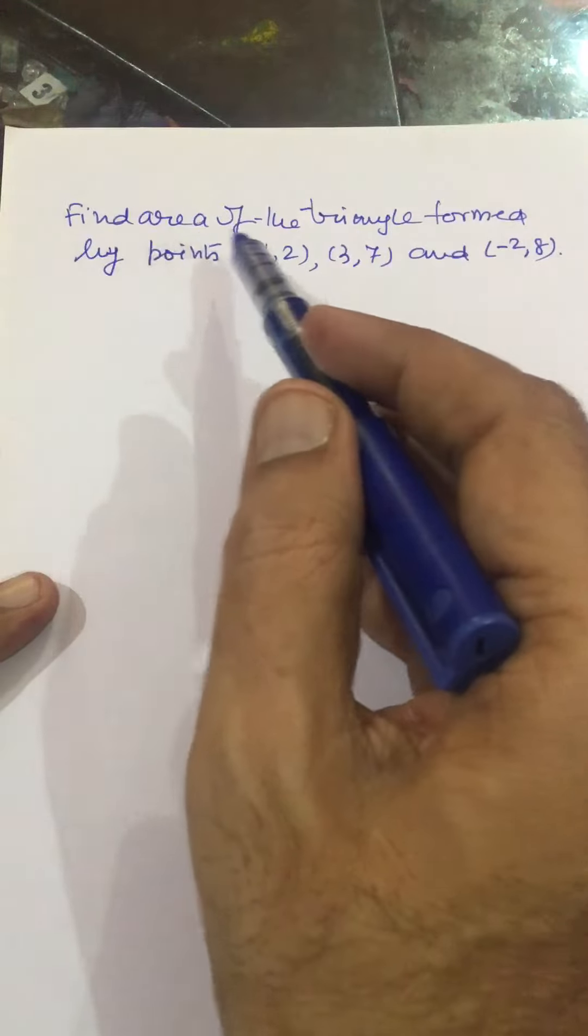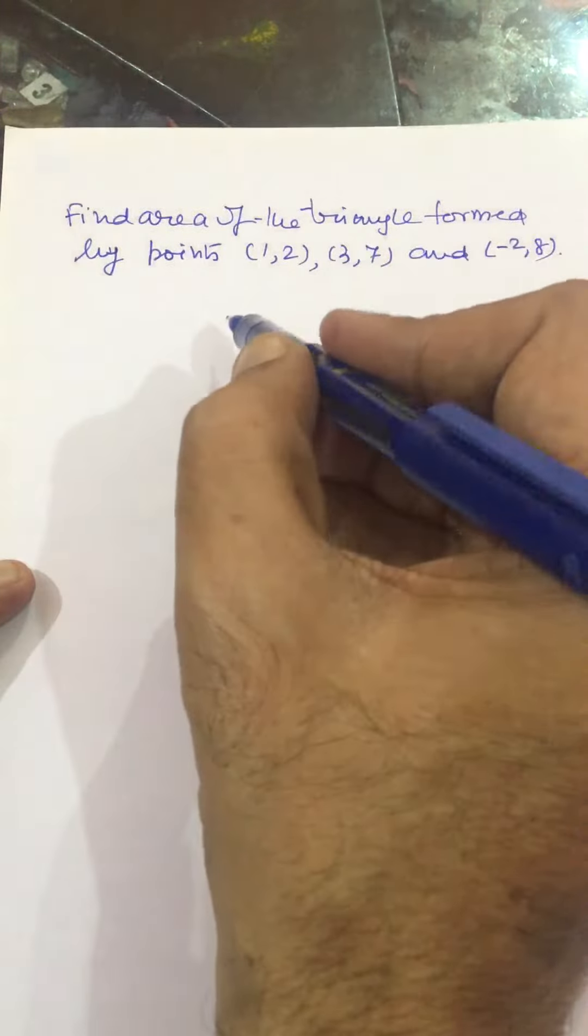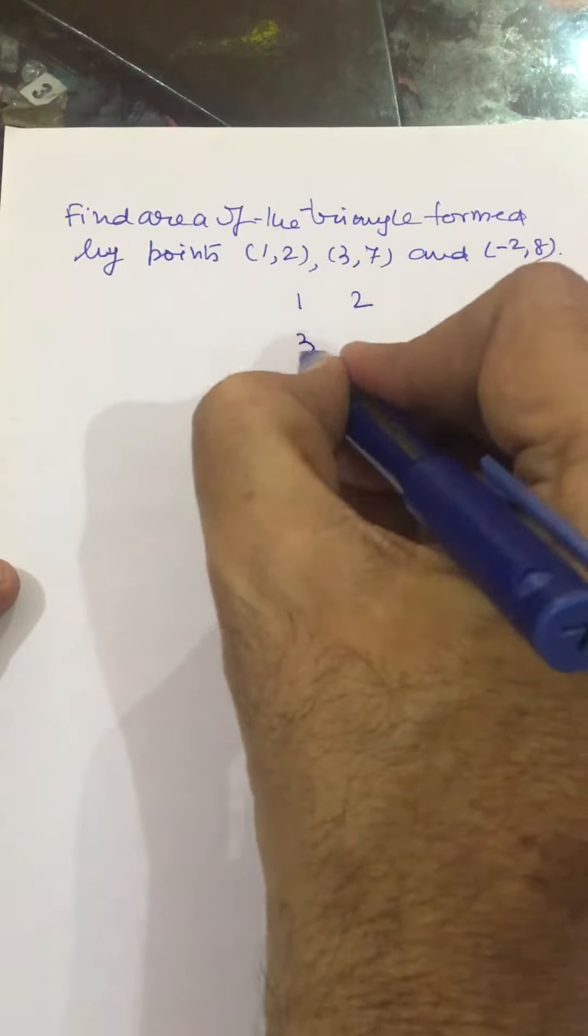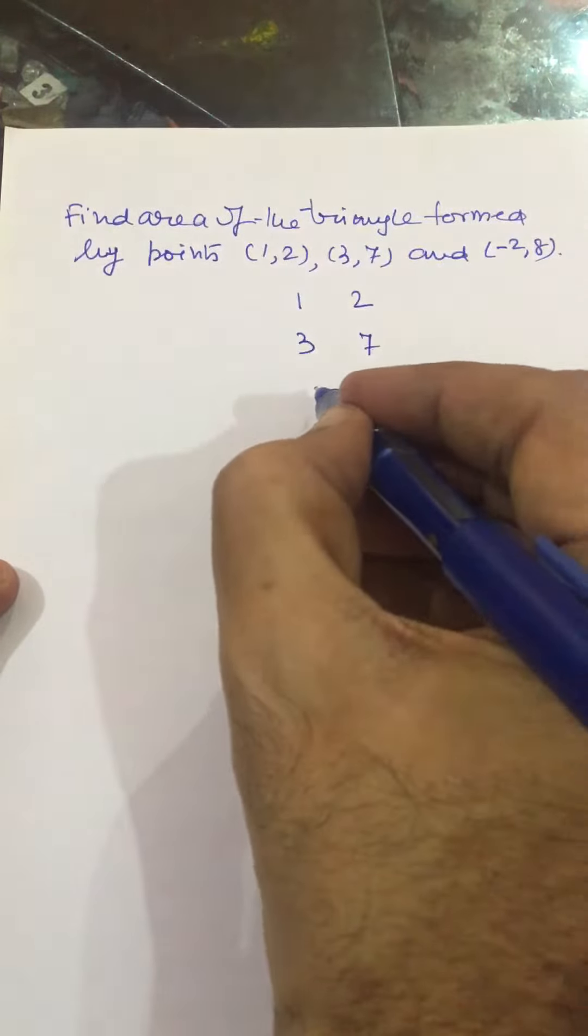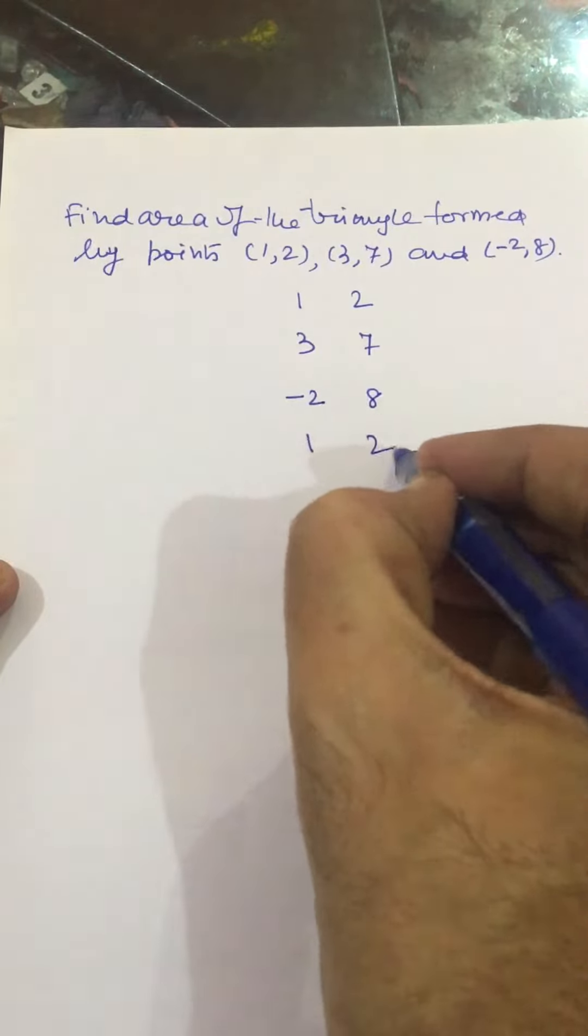Find the area of the triangle formed by points (1,2), (3,7), and (-2,8). For finding the area of the triangle, we write the points in this manner: 1,2; 3,7; -2,8; and again we write 1,2. So,